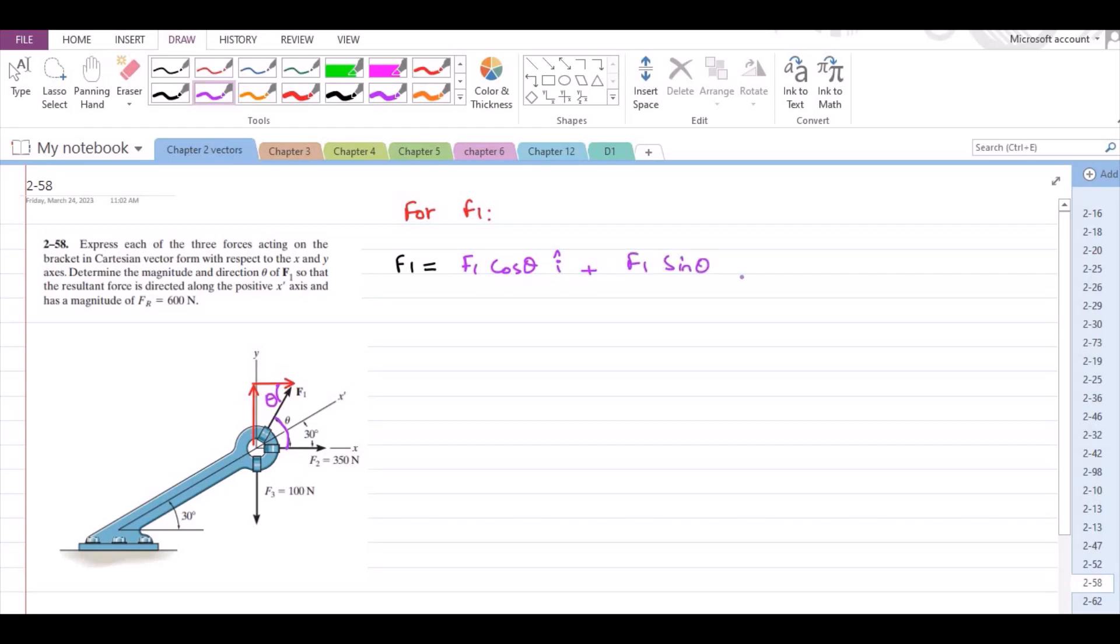And for F2, F2 can be written as, since F2 is only directed along the positive x axis, it has only one component, that is 350 i.